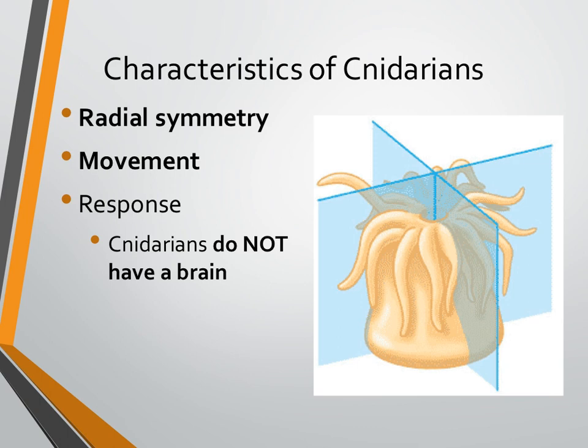Cnidarians have radial symmetry. Radial symmetry means they have symmetry along an axis. You can see that illustrated in the picture to the right. Cnidarians are also going to have movement. We know that movement is a characteristic of animals, with the exception of sponges, but sponges did have some small movement, and Cnidarians are going to illustrate that a lot better.